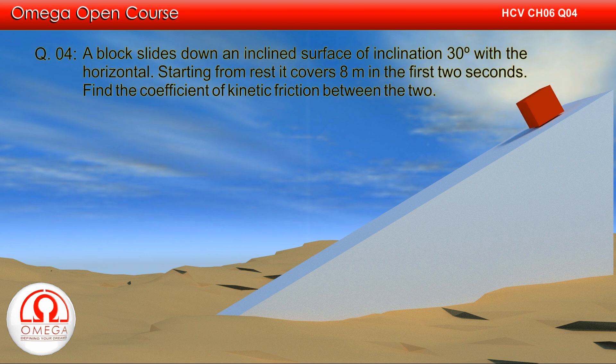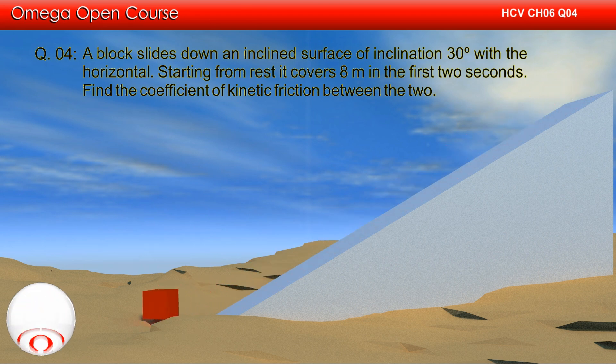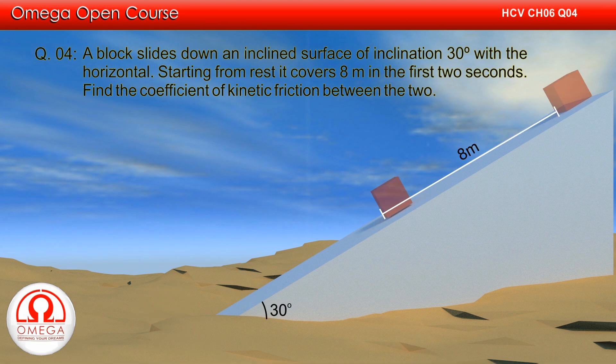A block slides down an inclined plane of inclination 30 degrees with the horizontal. Starting from rest, it covers 8 meters in the first 2 seconds. Find the coefficient of kinetic friction between the two.